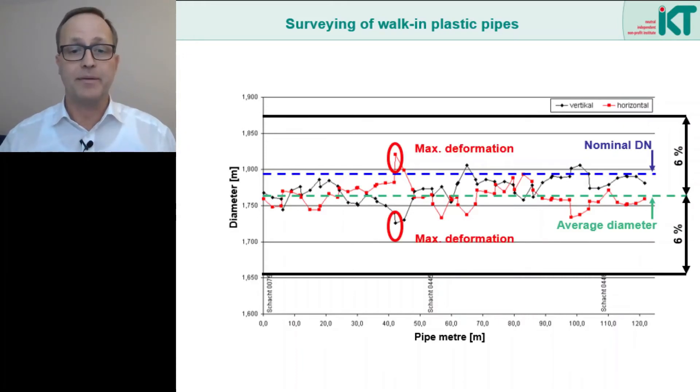In this example, the maximum values for the horizontal and vertical deformation are very well within this 6% range. So basically we can assume that the pipe has been installed according to the design. Why do I say basically? Well, this assessment assumes that the pipe is really deformed as a symmetrical ellipse, as we imagined it in the design.